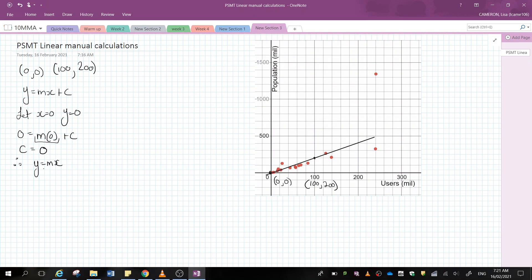Now I still have to determine the value of m because that's our gradient value. So I'm going to use my other piece of information. I'm going to let x equal 100 when y equals 200. So 200 is equal to 100m.